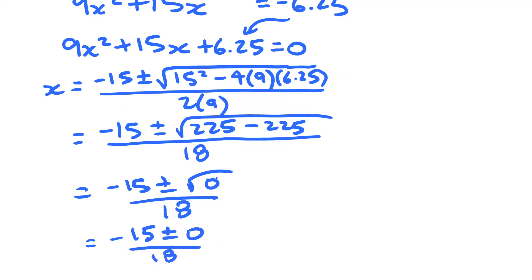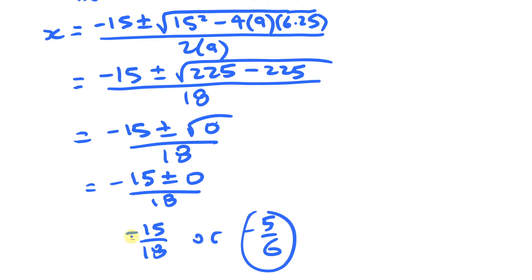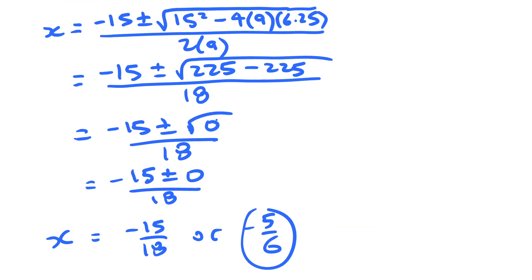When I have −15 ± 0, that doesn't make two different solutions. My only solution is −15/18, or in lowest terms, −5/6. This system has only one solution — one intersection point between the two equations. Now I need to find the corresponding y value.